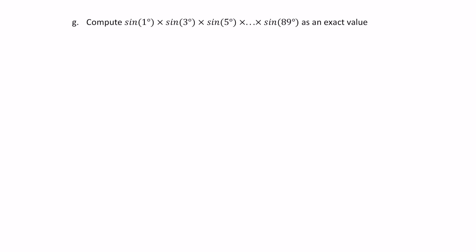Let's go through part G of these questions. This one is again going to use the double angle formula for sine. We want to compute the product of the odd degrees up to 89 — sine of 1 degree times sine of 3 degrees, dot dot dot, times sine of 89 degrees. This is what we want to calculate.